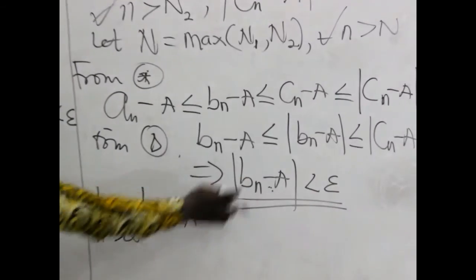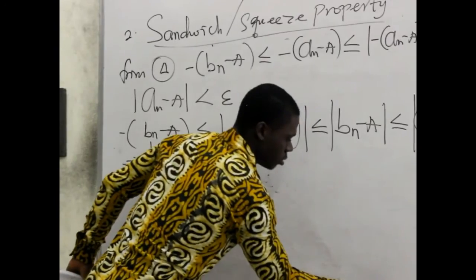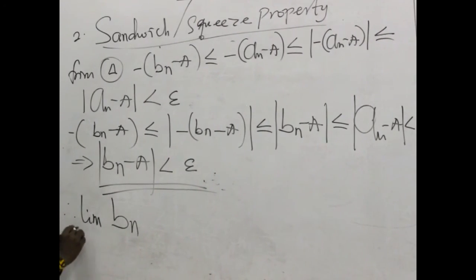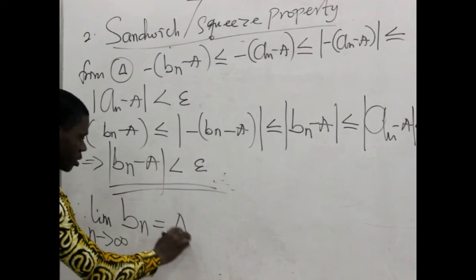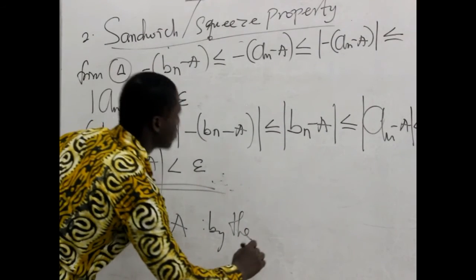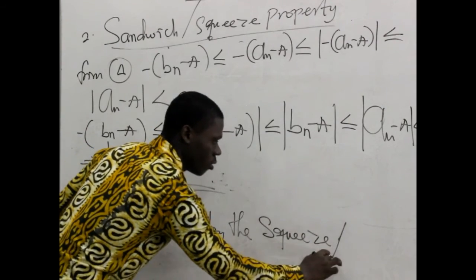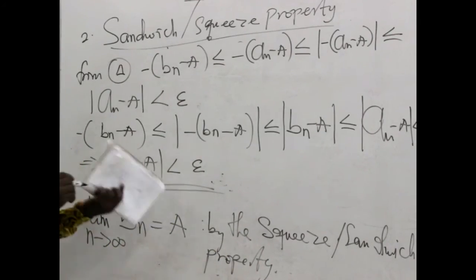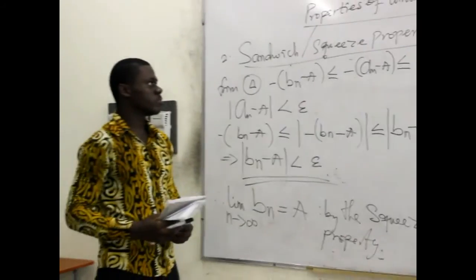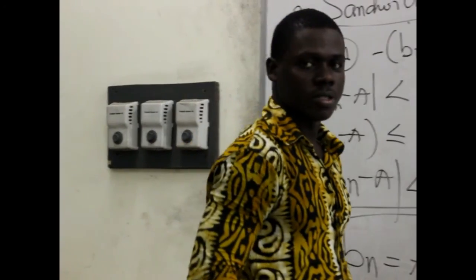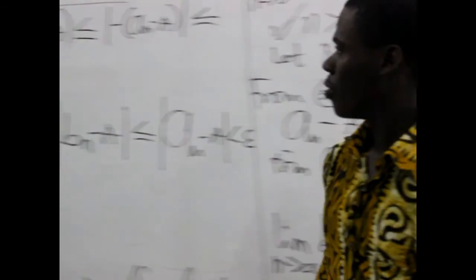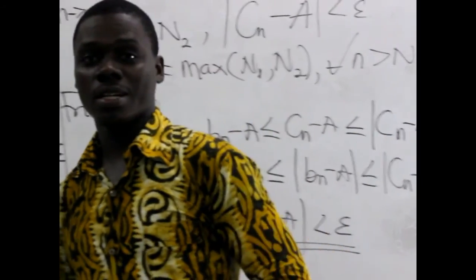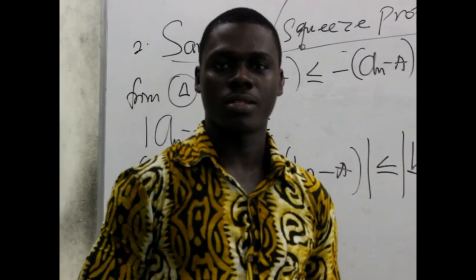So we conclude that the limit of this particular sequence as n approaches infinity is equal to a. That is by the squeeze or the sandwich property. That is all about the sandwich property or the squeeze property as far as the limit of sequences is concerned. Thanks very much for watching this tutorial. Catch you next time for more tutorials. Until we meet again, keep calculating and solving problems on introductory analysis. Thank you very much.